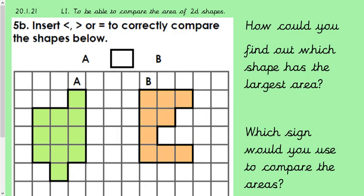So the first question then. Insert a greater than, less than, or equal sign to correctly compare the shapes below. So how could you find out which shape has the largest area? Which sign would you use to compare the area? So let's focus on this first question. How could you find out which shape has the largest area? So to do that you just need to count the squares to find out the area of them.